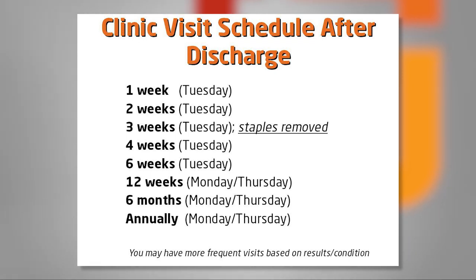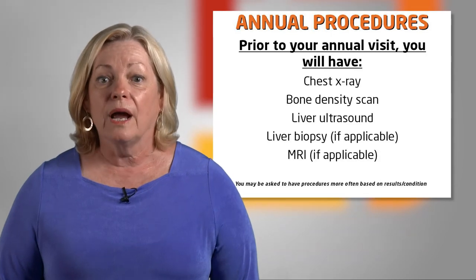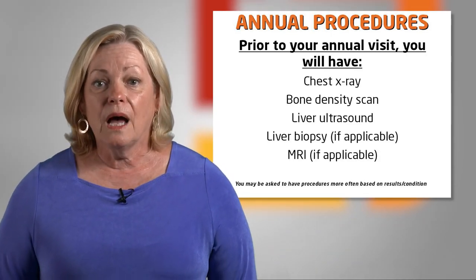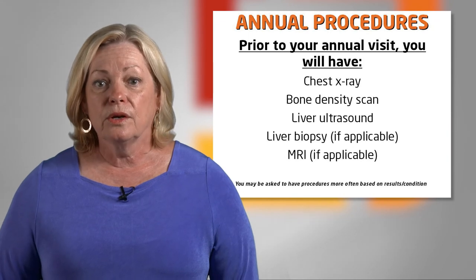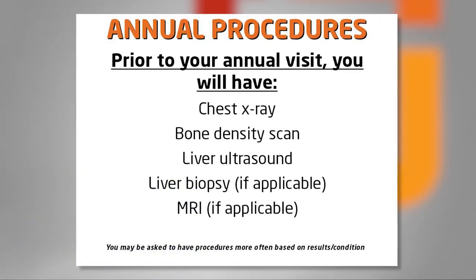You may have more frequent visits based on your condition and labs. Prior to your annual appointment, you'll be contacted to schedule annual procedures including a chest x-ray, bone density scan, liver ultrasound, and possibly a liver biopsy or MRI. You may be asked to have procedures more often based on lab work and your condition.